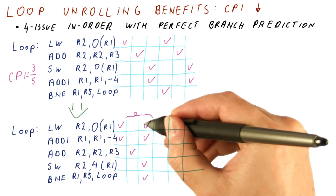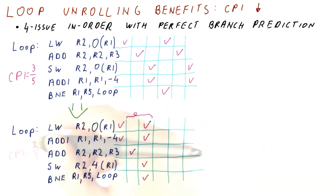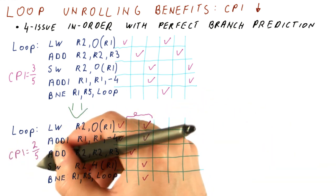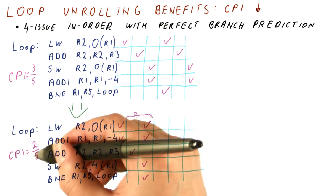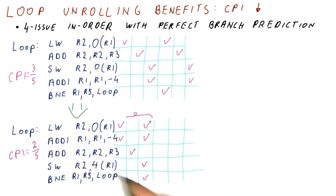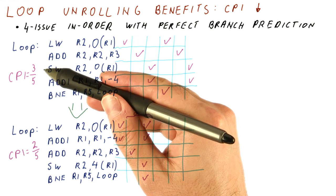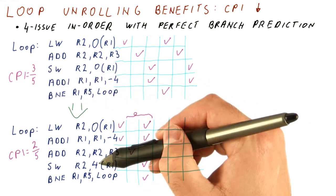So as you can see, now it takes two cycles to do these five instructions. So the CPI we get is now two over five. It took us two cycles to do the five instructions. This is significantly better than without scheduling, so scheduling did help.